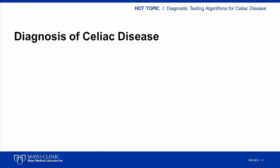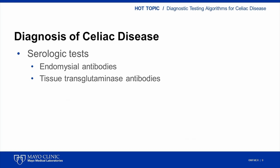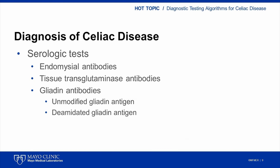Laboratory serology plays a key role in establishing a presumptive diagnosis of celiac disease. The primary antibodies associated with celiac disease are endomysial antibodies (EMA), tissue transglutaminase (TTG) antibodies, and gliadin antibodies. The first assays tested for antibodies against unmodified gliadin; however, these were inferior to TTG and EMA assays and generally not recommended. The newest generation uses deamidated gliadin as the antigen, offering improved diagnostic utility and preferred over assays using unmodified gliadin.